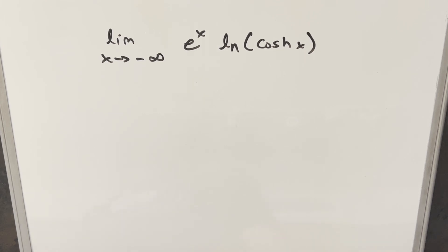Okay, we have an interesting limit problem. We've got the limit as x approaches minus infinity of e to the x times natural log cosh of x.